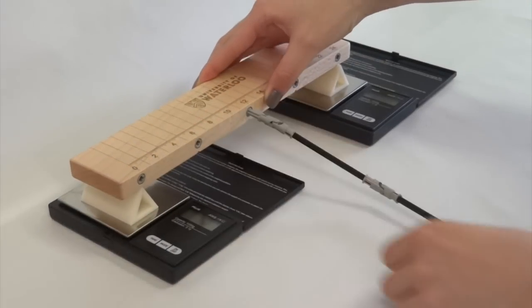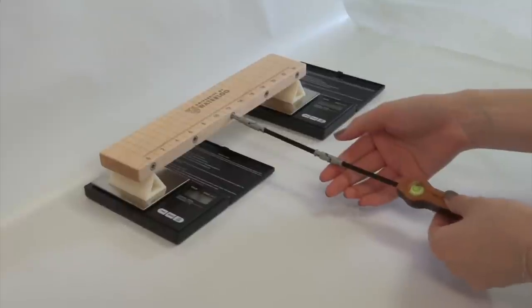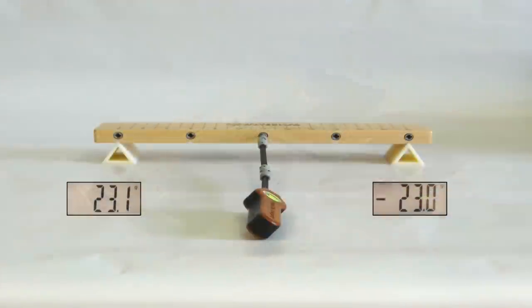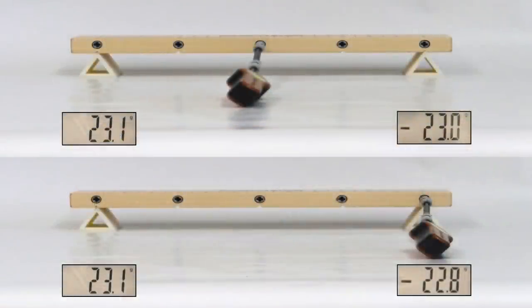If a torque is applied to the beam, students can see first-hand that where it is applied does not affect the reactions, a counter-intuitive fact that they might otherwise find difficult to accept.